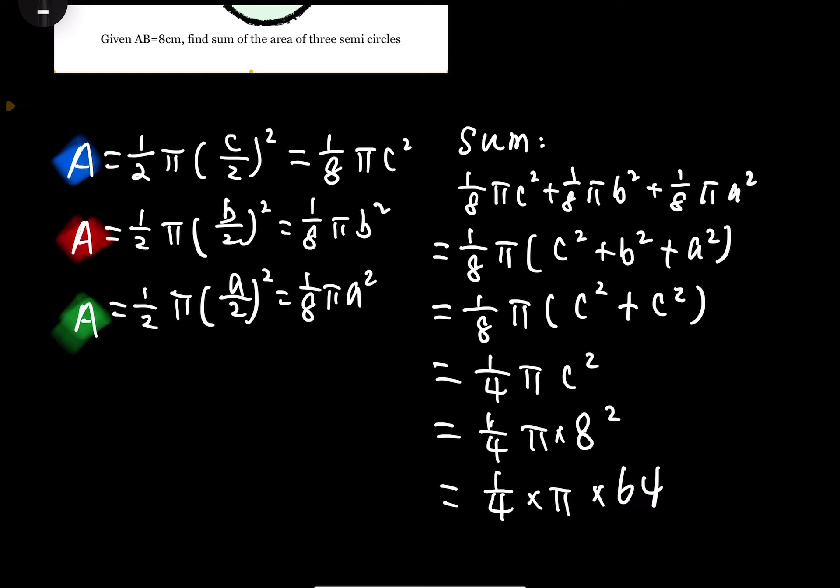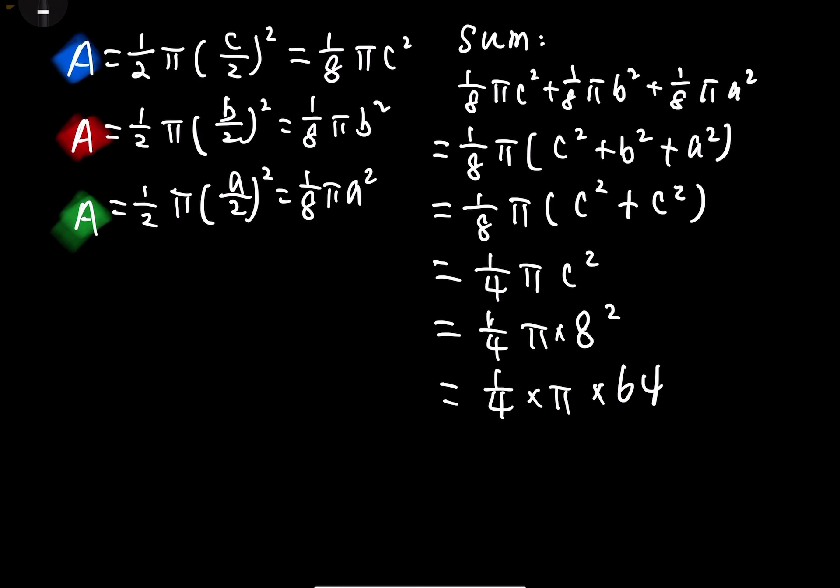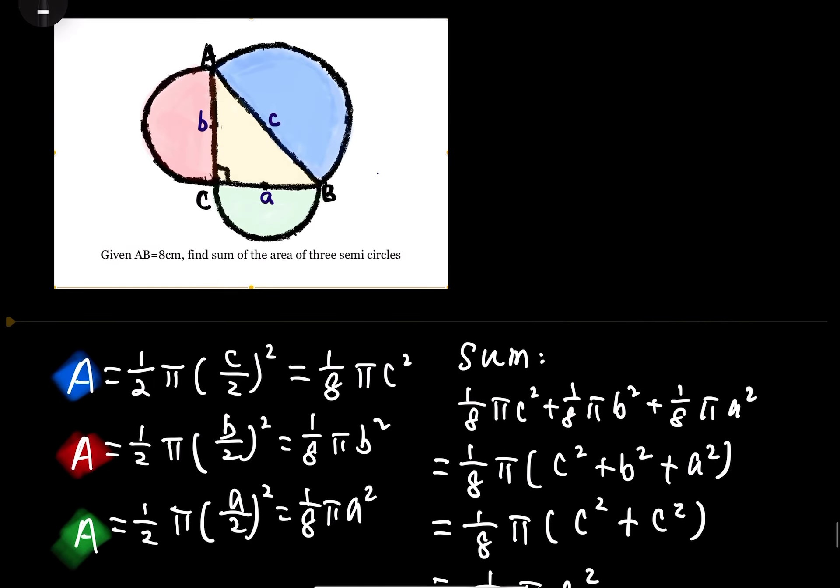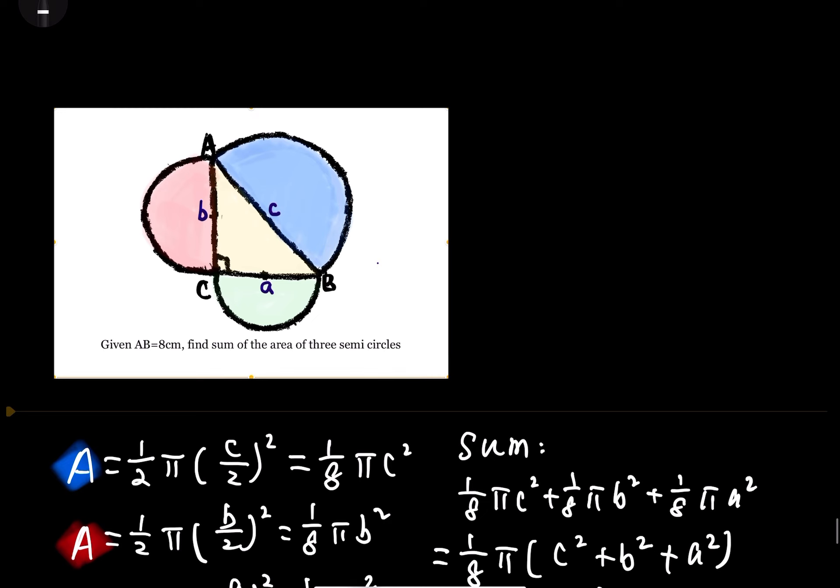Simplifying, we get the answer equals 16π cm squared. This is the sum of the area of these three semicircles.